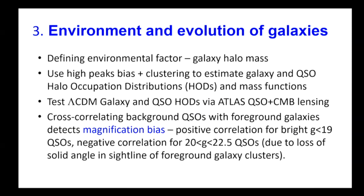Going to the environment of quasars to link what we're doing with ATLAS to the session theme of galaxy environment and evolution: one absolutely important environmental factor for galaxies is their halo masses. Traditionally, people use high-peaks bias and clustering — you look at galaxy–galaxy clustering and use the idea that higher-mass halos cluster more, fitting your galaxy correlation function by adjusting how many galaxies populate high-mass versus low-mass halos, yielding a Halo Occupation Distribution (HOD) that fits the galaxy clustering statistics.